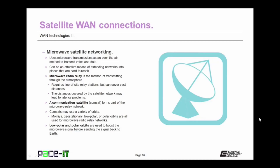Just like WiMAX, satellite requires line-of-sight relay stations, but it can cover even more distances because it utilizes a satellite network. Because of the distances that satellite transmissions can cover, this can lead to latency problems — the signal goes from a terrestrial location up to the satellite, probably over to another satellite, and then down to another terrestrial station. That's a significant amount of distance and there's going to be some lag.